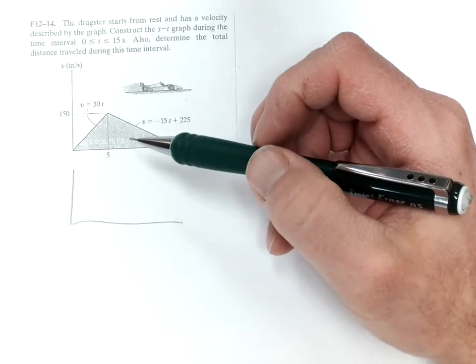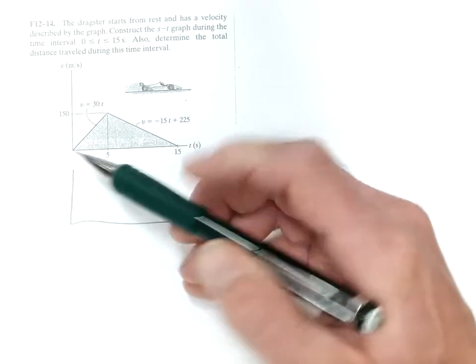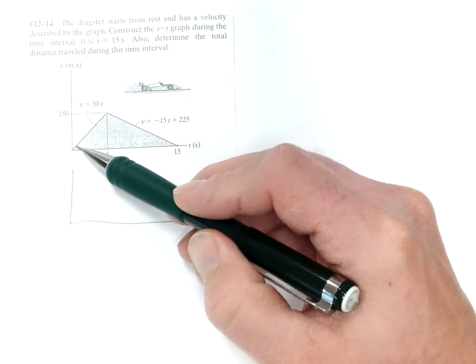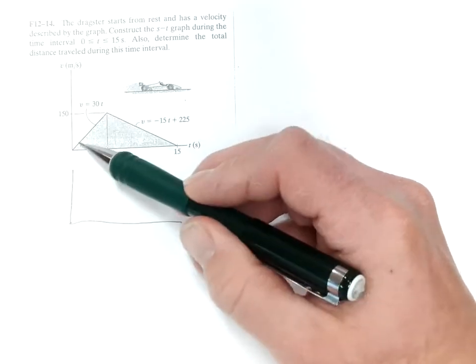So the s-t curve starts out at zero. And then at first it's going out slowly, and then it's going up quickly because of the area. The s-t is the area.